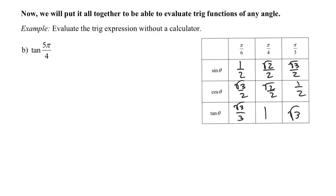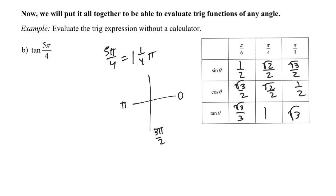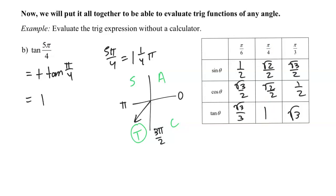Here in letter B, we've got tangent of five pi over four. Five pi divided by four is really just one and one fourth of a pi. Thinking about that: zero, one pi, one and a half pi — so one and a quarter pi is going to be in quadrant three. In quadrant three, tangent is positive. So tangent of five pi over four equals positive tangent of the reference angle for five pi over four, which is pi over four. Tangent of pi over four is equal to one, and therefore tangent of five pi over four is also equal to one.